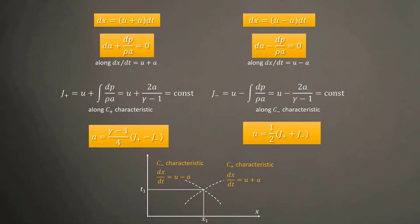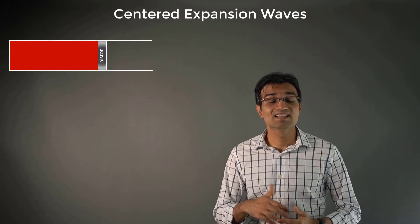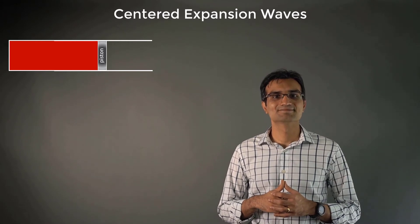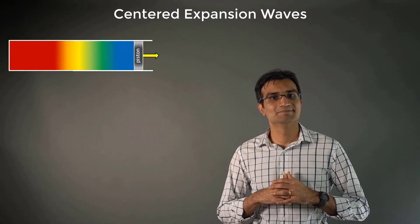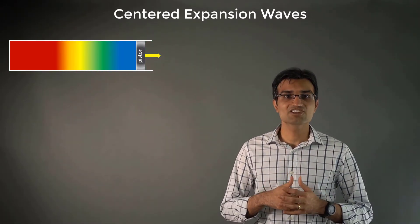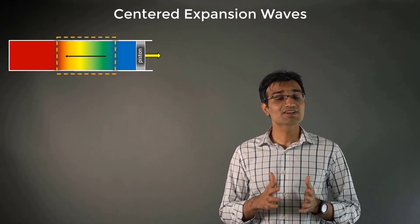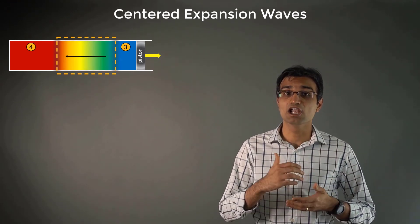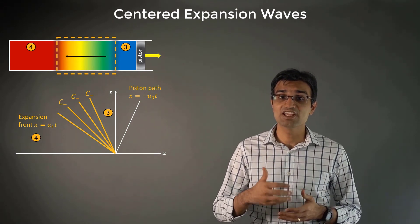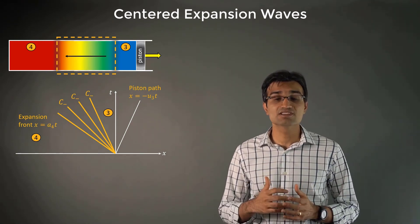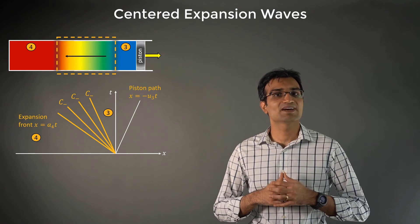Coming back to the analysis of unsteady expansion waves, let us consider a tube filled with a gas that has a piston at the other end. Now, let's say the piston is withdrawn to the right with a constant velocity U3. This would produce an expansion wave propagating to the left as shown. Considering J plus and J minus are constant along the respective characteristics C plus and C minus, and that regions 3 and 4 shown here are the regions of constant flow properties, we can show that J plus is constant through the expansion wave.